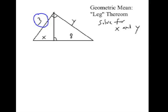So, the leg of the triangle is the geometric mean between the near part of the hypotenuse, which is X, and the entire hypotenuse, which is X plus 8.